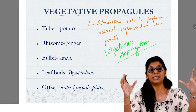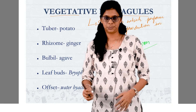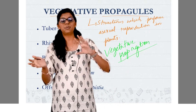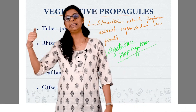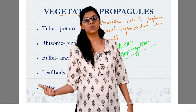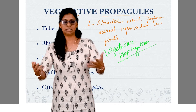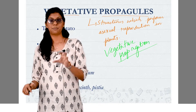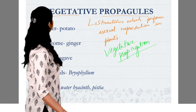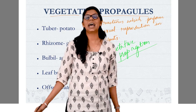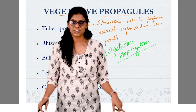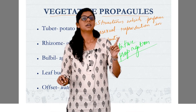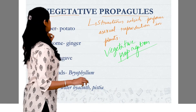What is vegetative propagation? It does not involve the reproductive part — like stamen. Instead, it involves the vegetative part: that is leaf, stem, and root. So the new plant formed is known as vegetative propagation. The structures involved in this process — in vegetative propagation — we call them vegetative propagules.